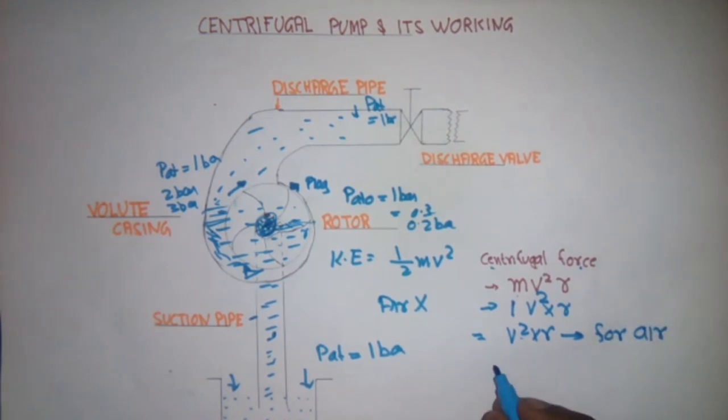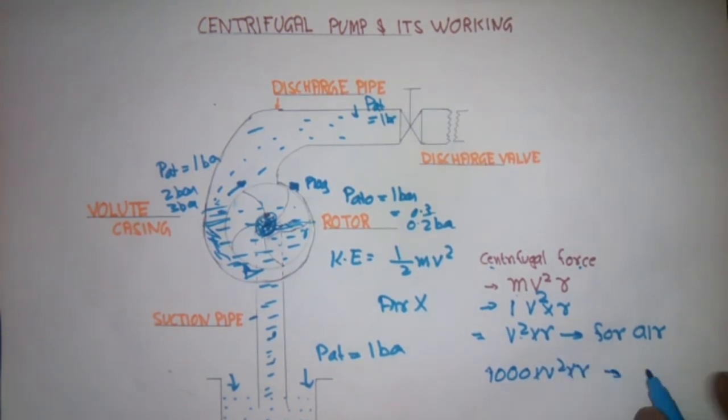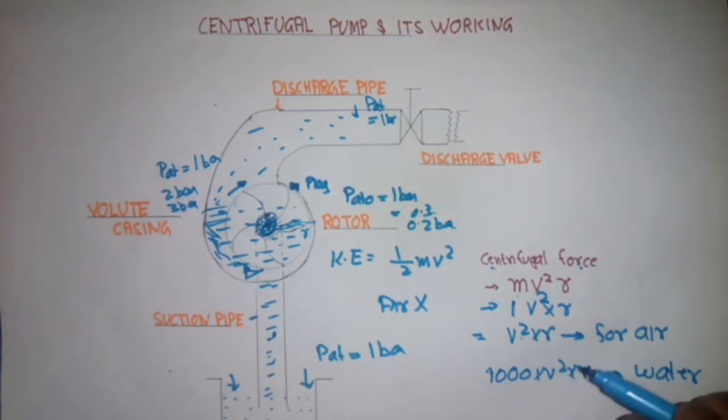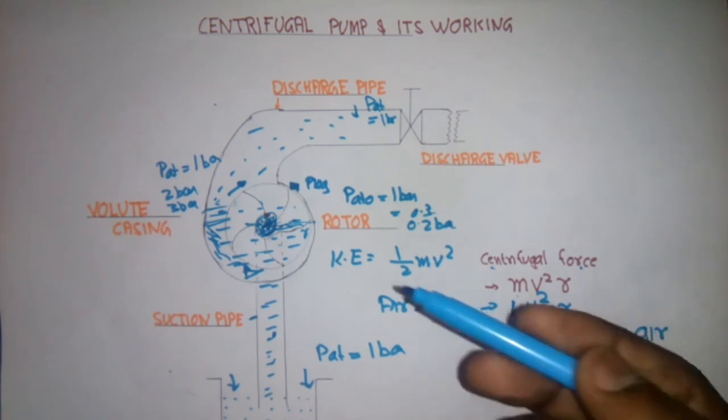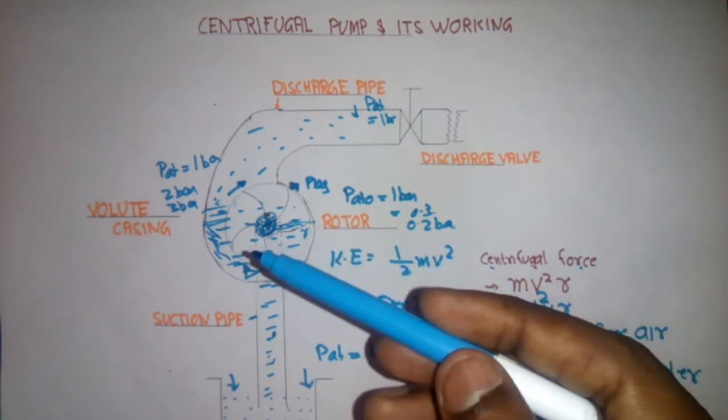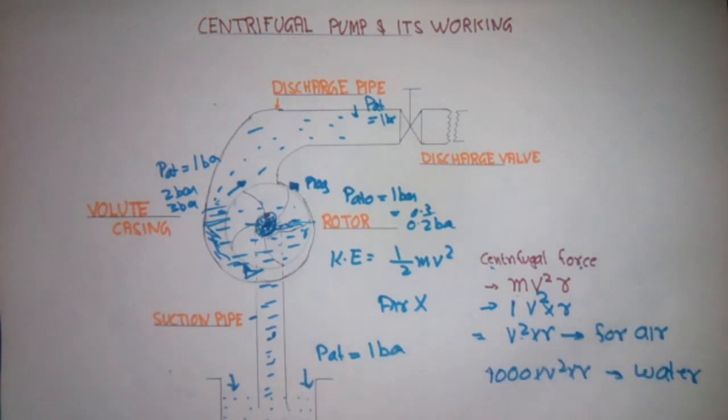Now I will take water. In case of water, the water density is 1000 and v^2 r. Now you can see in case of water, it is 1000 times more than the air. So the centrifugal force is not able to suck the air in case of pump. That's why this pump requires priming.